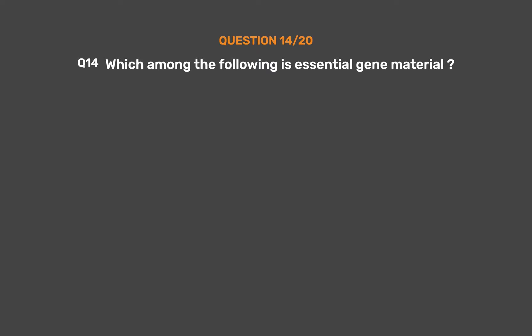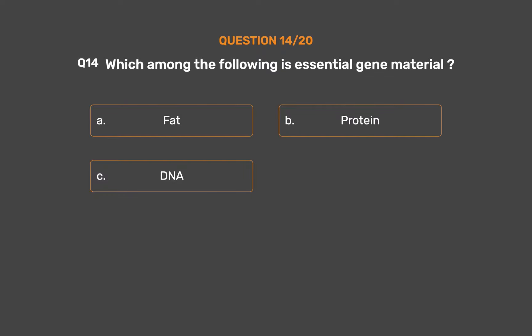Question No. 14. Which among the following is the essential gene material? Option A: Fat. Option B: Protein. Option C: DNA. Option D: (not provided). The correct answer is Option C: DNA.